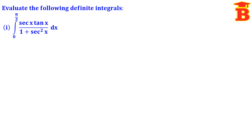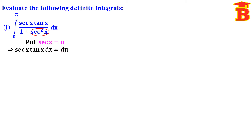Here we are going to use the substitution method. We take u equal to sec x. So put sec x equal to u. Differentiating this, the differentiation of sec x is sec x tan x into dx equal to du. So whenever we take u, we have to substitute du also. The differentiation of sec x is sec x tan x, and that is present in the numerator.